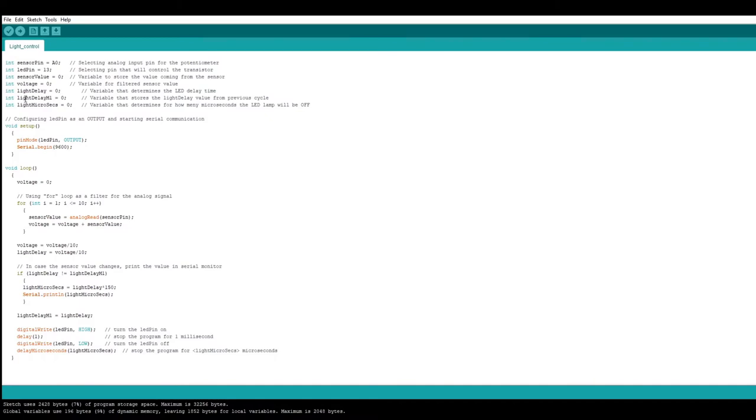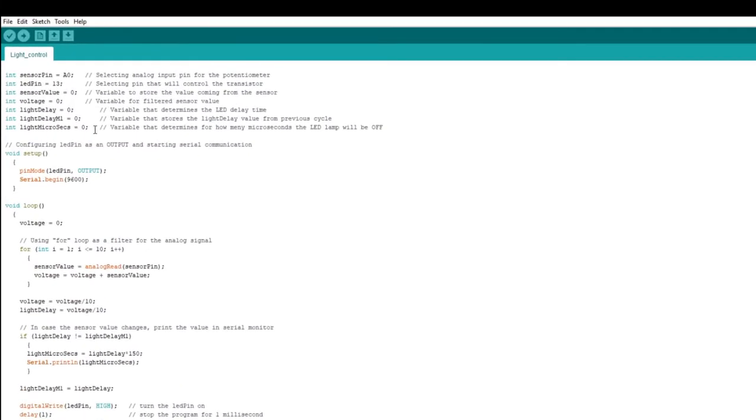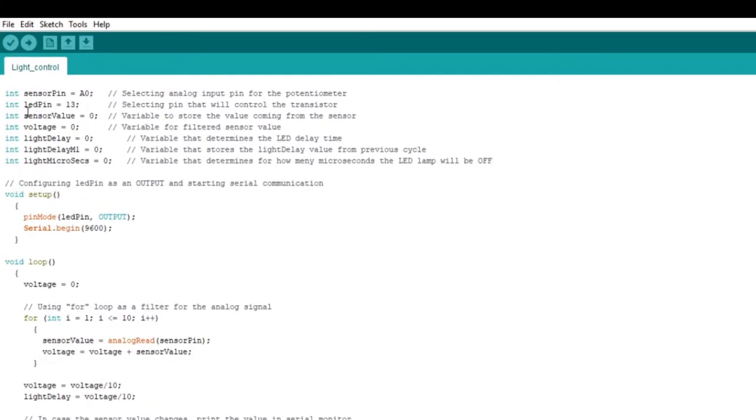As you can see I am using the standard Arduino software. These are all the variables that are used in this program. Here I am declaring which of the analog inputs will be used for the potentiometer. As you can see in this case it will be A0. And here I am declaring which of the pins will be used as digital output to control the transistor. In this case it will be pin 13.